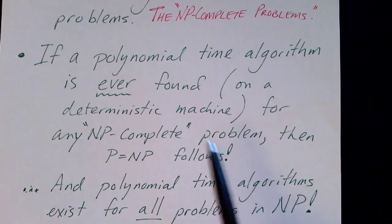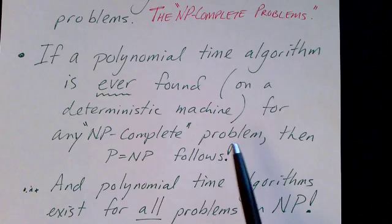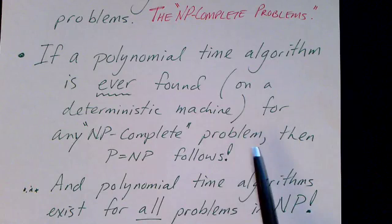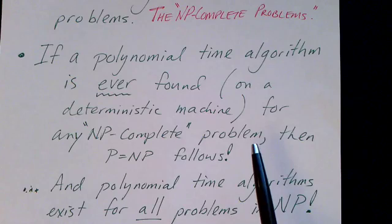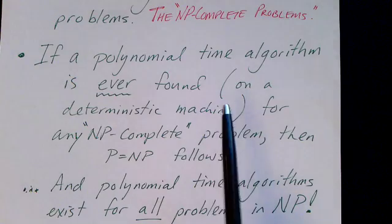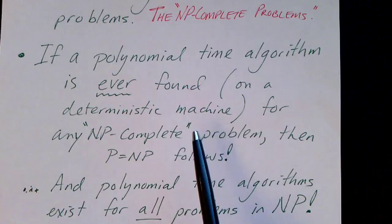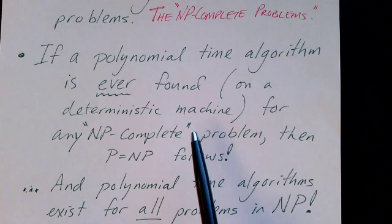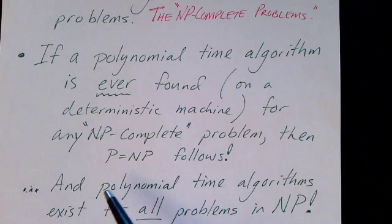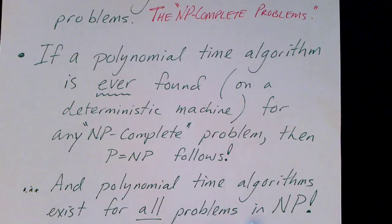So now let's look at the NP-Complete problems. If you've got some NP-Complete problem and you suddenly find a polynomial time algorithm to solve that problem, you haven't just solved that one problem in polynomial time. You've basically proven that a polynomial time algorithm exists for all the problems in NP.